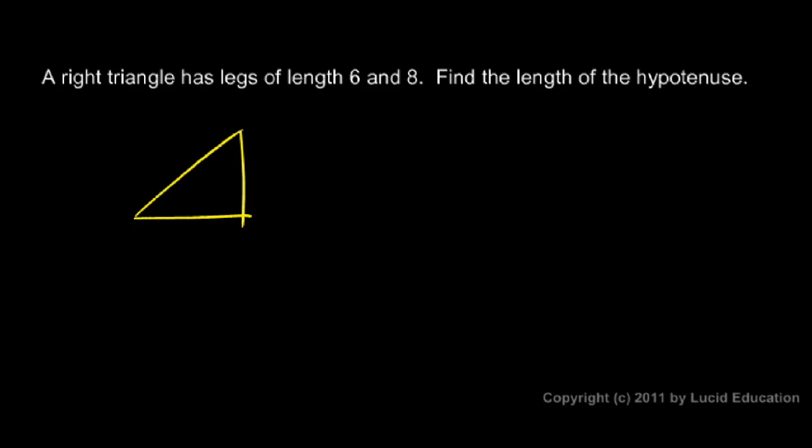Okay, just make a quick sketch here of a right triangle. It doesn't have to be perfect, but label the sides. One leg is length six and one leg is length eight. And remember, the legs are the two sides that are not the hypotenuse, so don't label the hypotenuse six or eight.